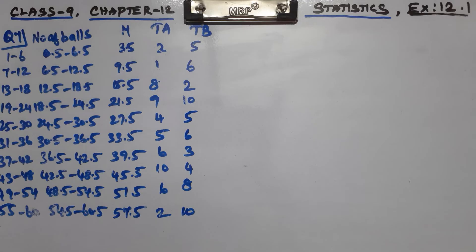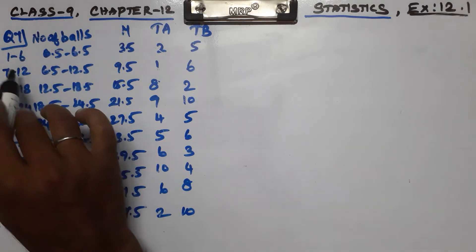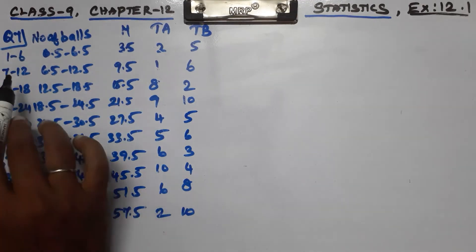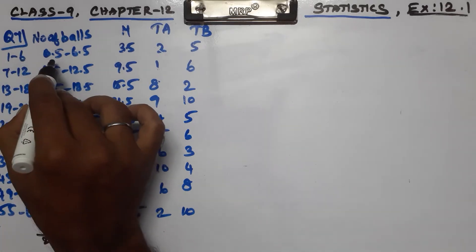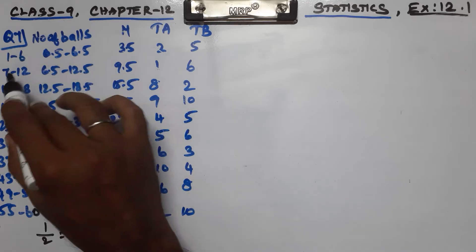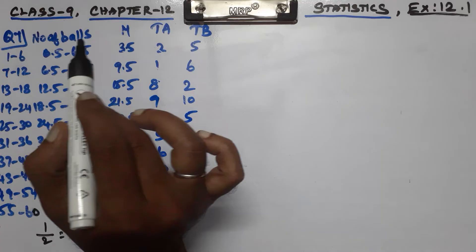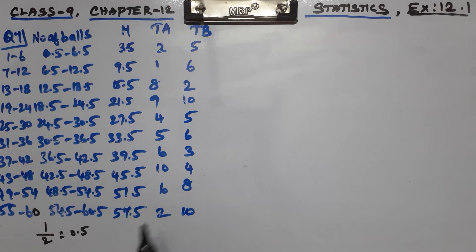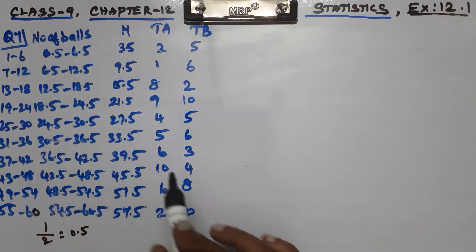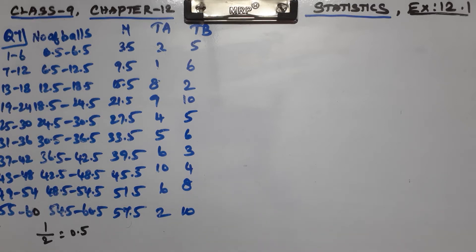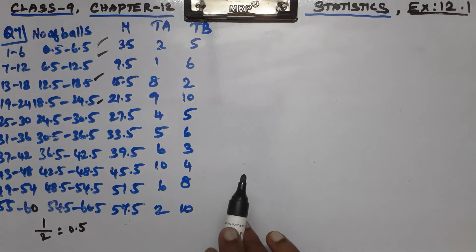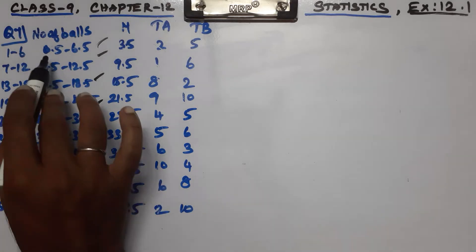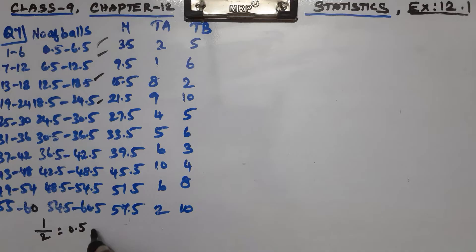We adjust each interval by adding and subtracting 0.5. So now we have two numbers with median. What do you do with median? For the lower and upper interval, you add the two boundary numbers — for example, 0.5 plus 6.5.